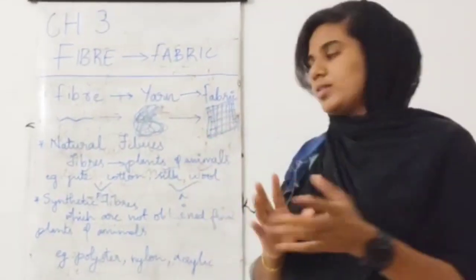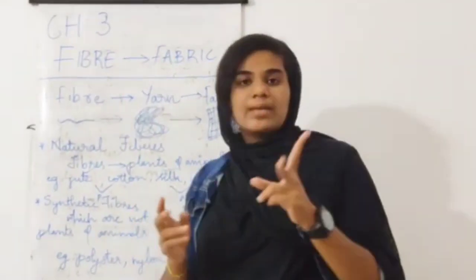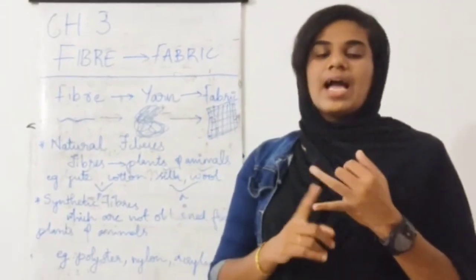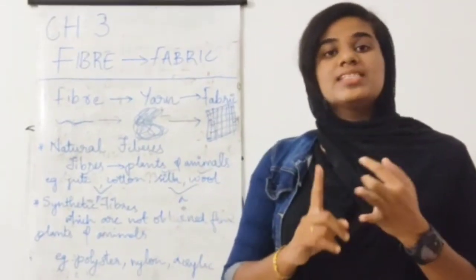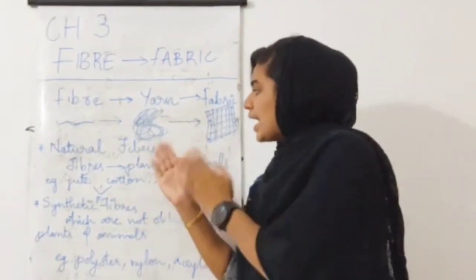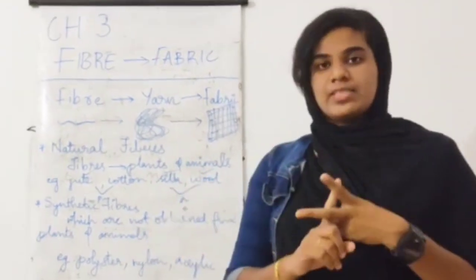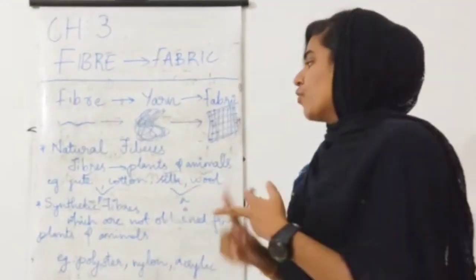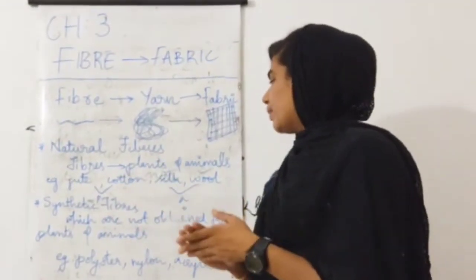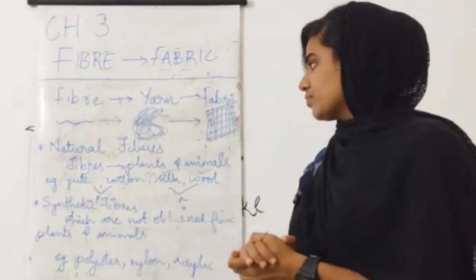There are two types of fibers. The first one is natural fibers and the second one is synthetic fibers. Natural fibers are further divided — the first one is plant fibers and the second one is animal fibers.